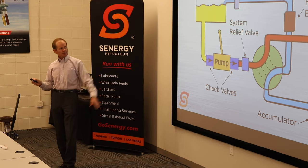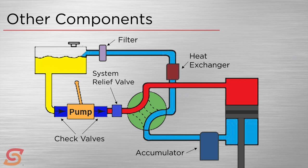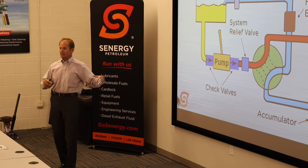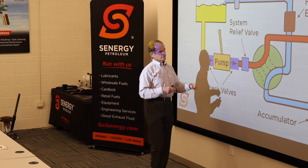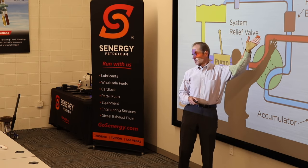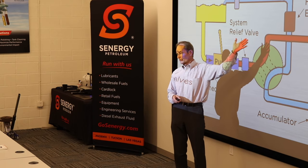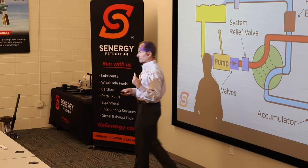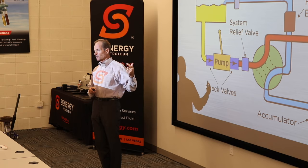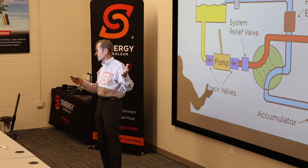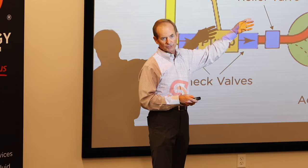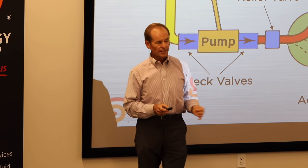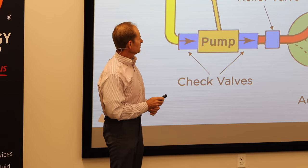There is one more optional component: the heat exchanger. These systems generate heat by themselves and may also be in a hot environment. The fluid carries some heat and needs to be cooled with a heat exchanger. Sometimes these are air-based heat exchangers — essentially blowing across a radiator — and sometimes it's a water-type tube-and-shell heat exchanger, if you have cold plant water available, depending on your needs.